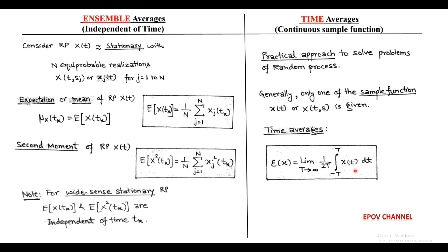Since the time average is the continuous sample function, integration is used. These two averages — ensemble averages and time averages — are used to find the statistical property of random process.